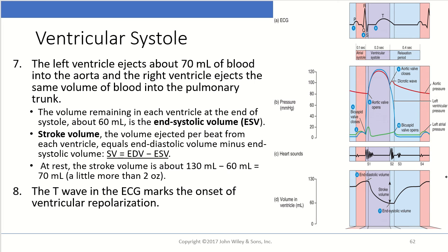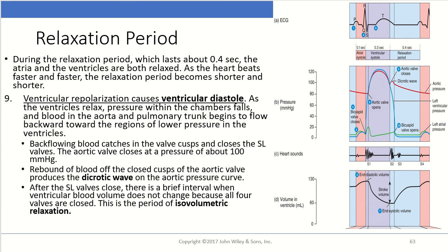The T wave on the EKG marks the onset of ventricular repolarization. Next is the relaxation period, lasting about 0.4 seconds, during which both the atria and ventricles are relaxed. As the heart beats faster, the relaxation period becomes shorter. Ventricular repolarization causes ventricular diastole, and as the ventricles relax, the pressure within those chambers falls.